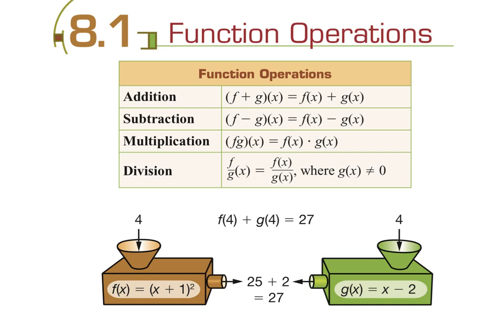Remember, a function is something where you have one output for every input. We've done the vertical line test — as long as you can draw a vertical line and it only crosses once, then it's a function. That means you only have one output for every input, so one y for every x.